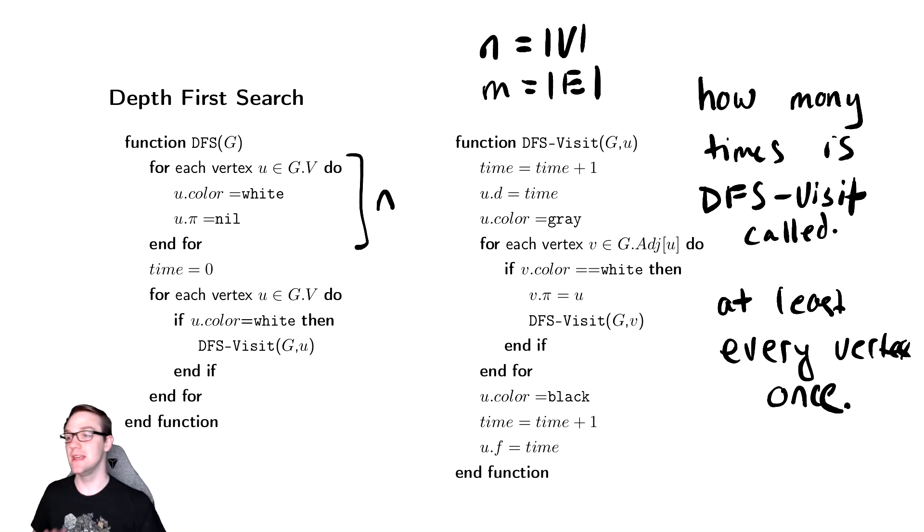So it can only get called exactly once. It visits each vertex at least once and exactly once, it turns out. Because it's never going to get called on you again once we color it gray, because it can only get called if it's white.